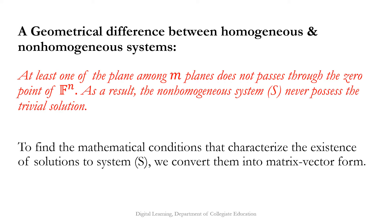Here are some examples of homogeneous systems that possess infinitely many solutions: system S2 given by x₁ + 3x₂ = 0 and 4x₁ + 12x₂ = 0 over the real field; and system S3 given by 2x₁ + 3x₂ + x₃ = 0 and x₁ − x₂ + 4x₃ = 0 over the real field. The geometrical difference between homogeneous and non-homogeneous systems is that the non-homogeneous system never possesses the zero solution, because at least one of the m planes does not pass through the origin of Fⁿ.